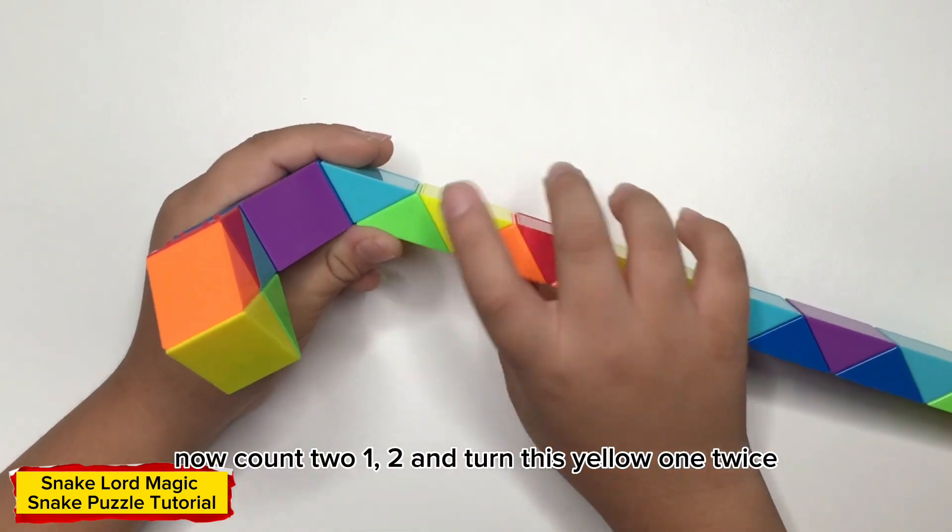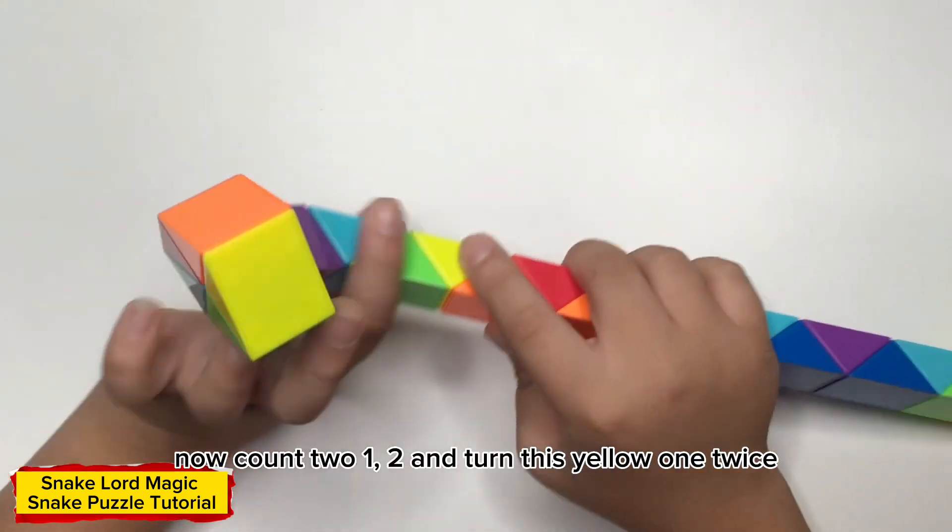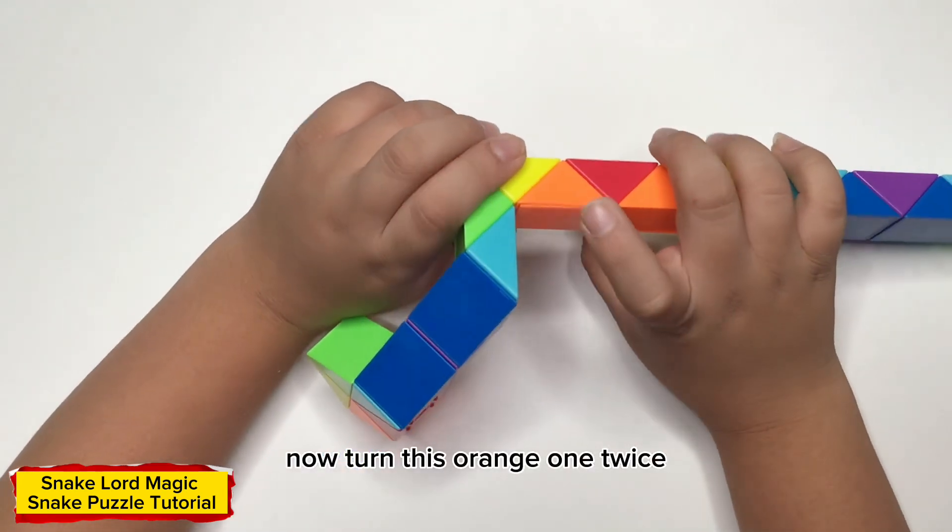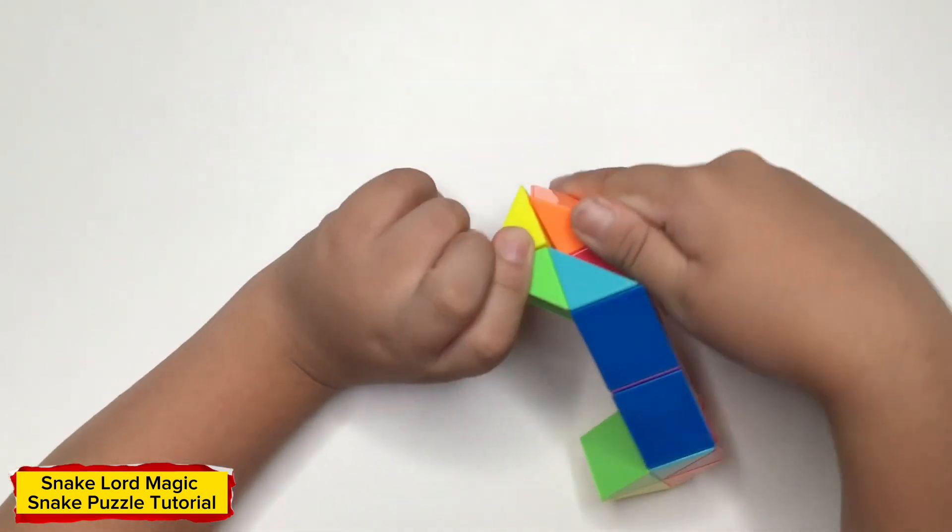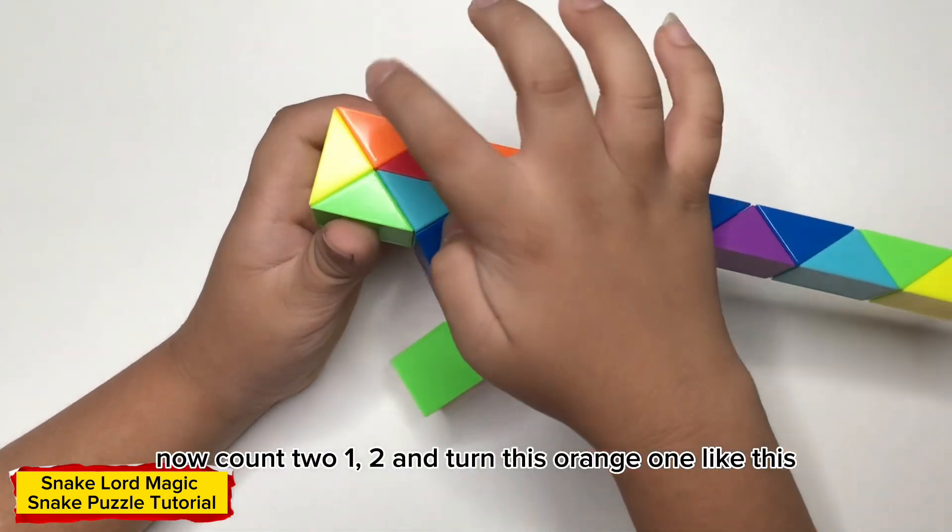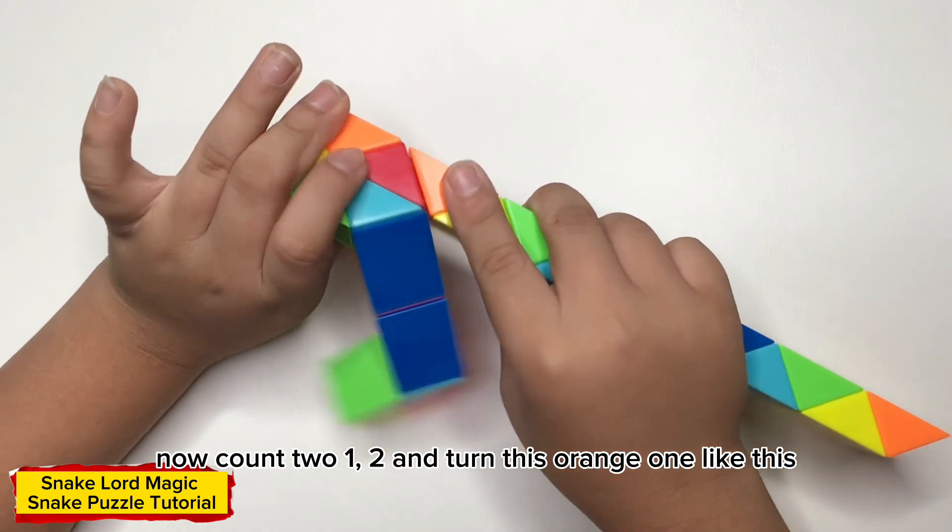Now count two, one, two and turn this yellow on twice. Now turn this one. Now count to one, two and turn this one like this.